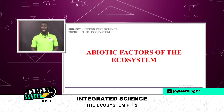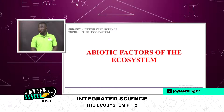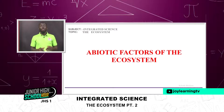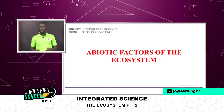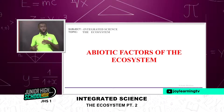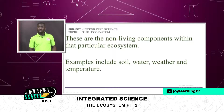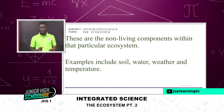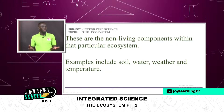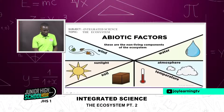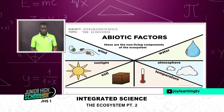The abiotic factors of an ecosystem are the non-living things or components — that can be sunshine, temperature, wind, water, soil, and other essential factors. These do not have life and do not go through what are called life processes.